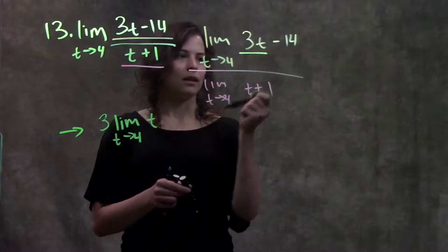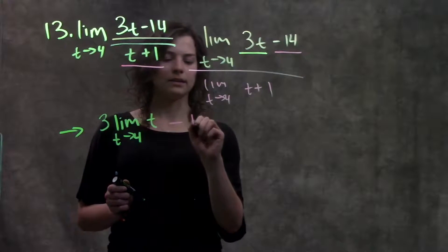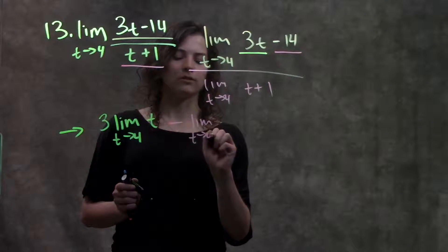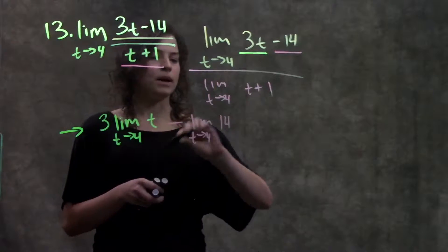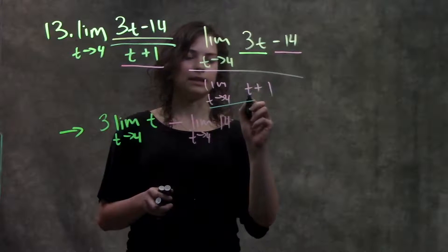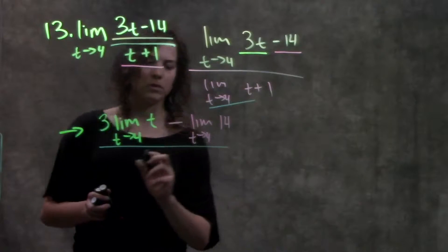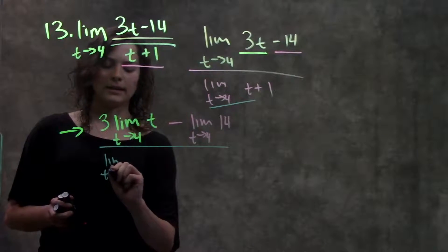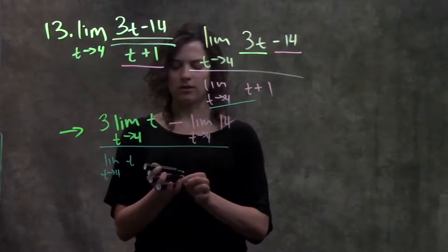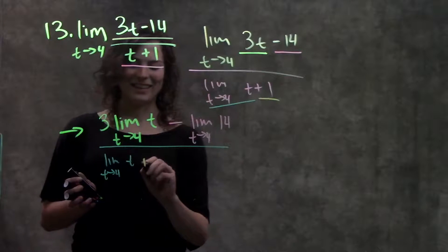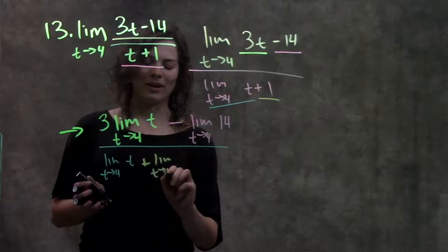Okay, then I have minus the limit as t approaches 4 of 14, and now on the bottom, I do the same thing. I separate out the t and the plus 1, divided by the limit as t approaches 4 of t, plus the limit as t approaches 4 of 1.